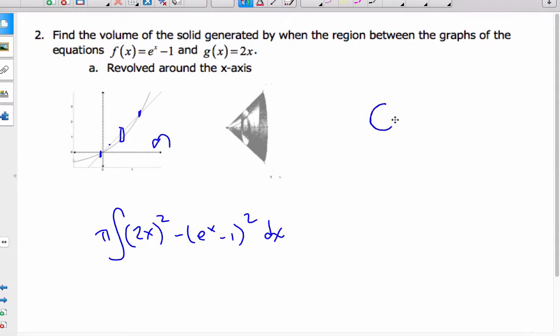Because if I think about it, when I rotate this around, I'm going to get a washer, where the outside radius is the outside function, 2x, and this inside radius is this inside function, the lower function, e to the x minus 1.